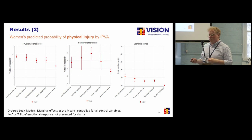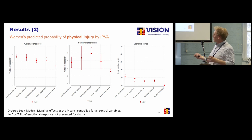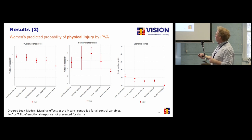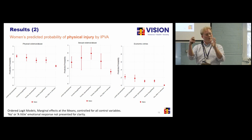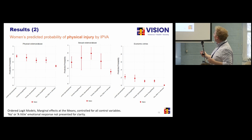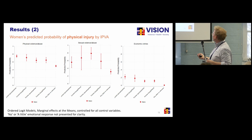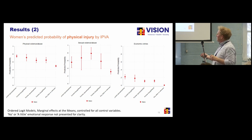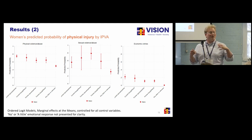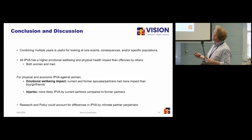For the risk of physical injury, results are slightly different. Current spouses have a higher risk of injury from physical violence than physical violence committed by former spouses, and also by former boyfriends or girlfriends. For sexual violence, there are no statistically significant differences between the intimate partner perpetrator types. Among economic crimes committed by a current spouse or partner, about 20% leads to injury, which is significantly higher than by former spouses. This indicates that crimes recorded in the face-to-face section by current spouses seem to have a higher risk of injury than by former spouses, at least for physical and economic crimes.